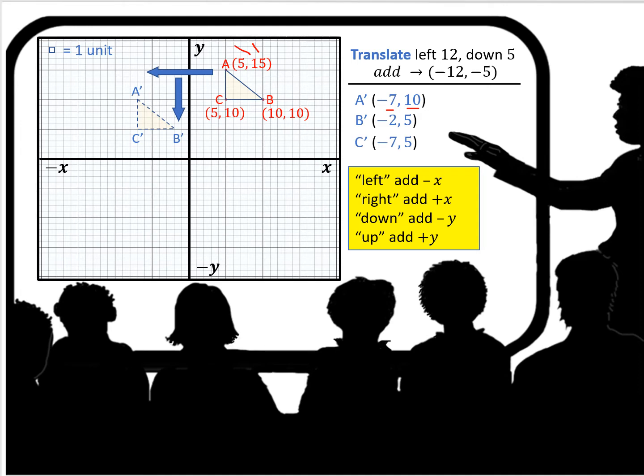And likewise, for B prime and C prime, you're going to add negative 12 to the x coordinate and add negative 5 to the y coordinate. So there you see a translation of ABC left 12, down 5.